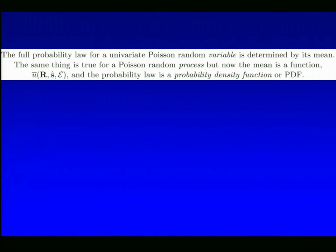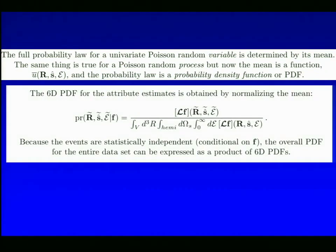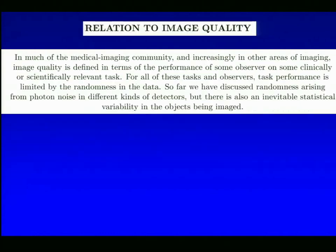Now, one thing you know about Poisson statistics is that the entire probability law, any statistical moment you want, is determined by the mean. The same thing is true of a Poisson random process, but now the mean is a function, and the probability law is a probability density functional. So I can get a 6D point spread function simply by renormalizing this mean LF, and because the events are statistically independent under the Poisson assumptions, the overall PDF can be expressed as a product of these 6D PSFs.